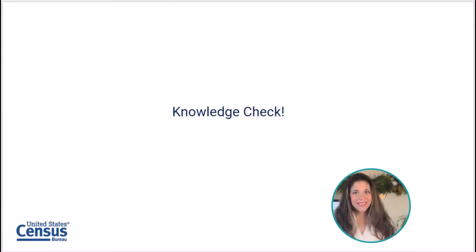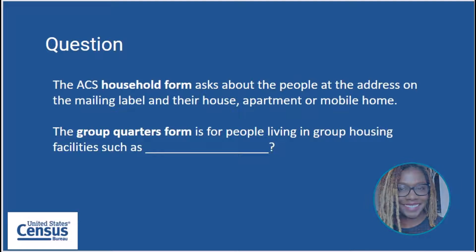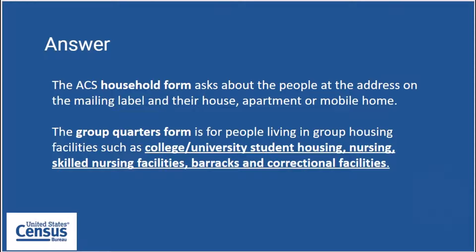Let's take another break for a knowledge check. The ACS household form asks about the people at the address on the mailing label in their house, apartment, or mobile home. The group quarters form is for people living in group housing facilities such as — blank. The answer is: college or university student housing, nursing or skilled nursing facilities, military barracks, and correctional facilities.